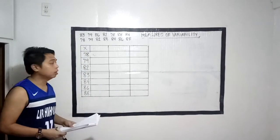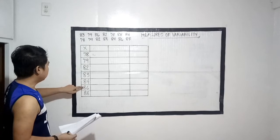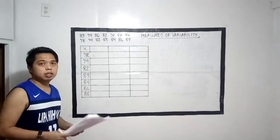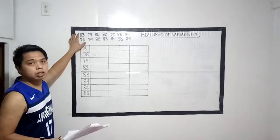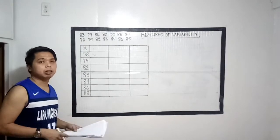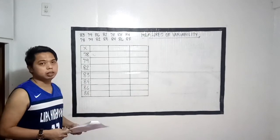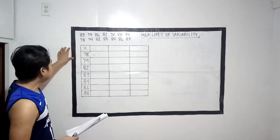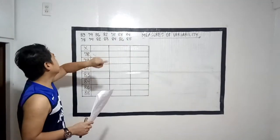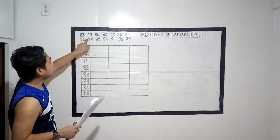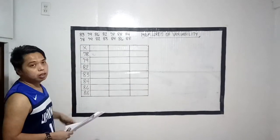I arranged the scores from lowest to highest para mas madali. We have: 78, 79, 82, 83, 84, 86, and 88. Mapapansin din natin, mag-fill up na lang tayo ng 7 scores kahit ang given natin ay 14 scores — hindi na natin isinasama sa table yung mga nauulit na number. So isa lang ang ginamit natin para sa mga repeating values, kagaya ng 88 at 79. Kaya nagkaroon lang tayo ng 7 scores.